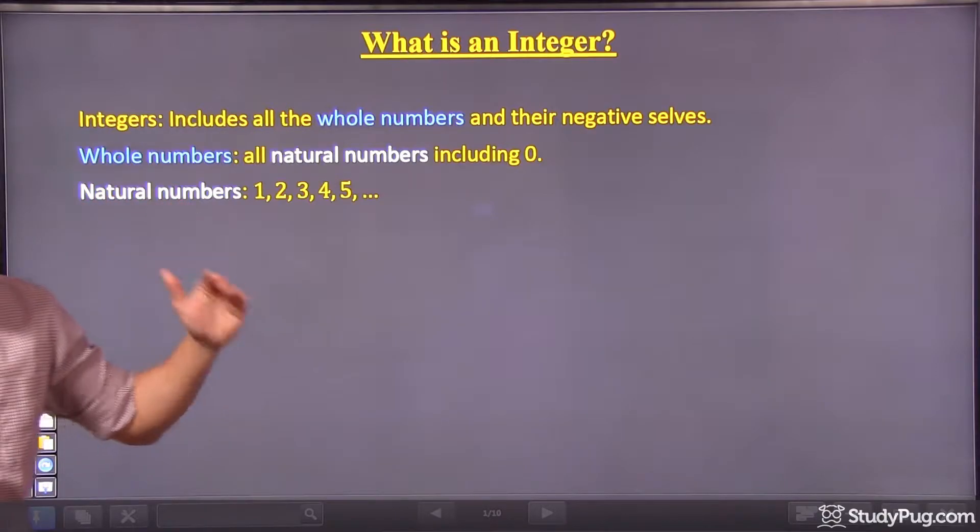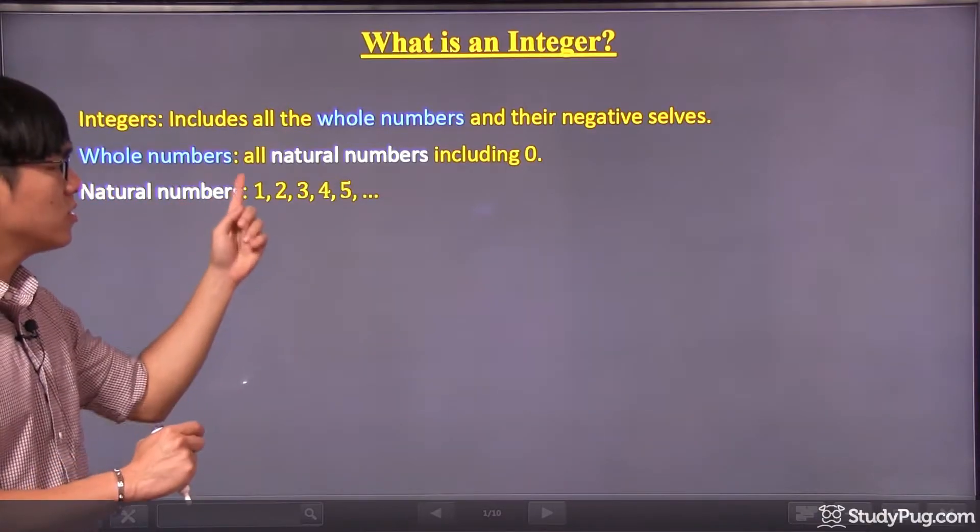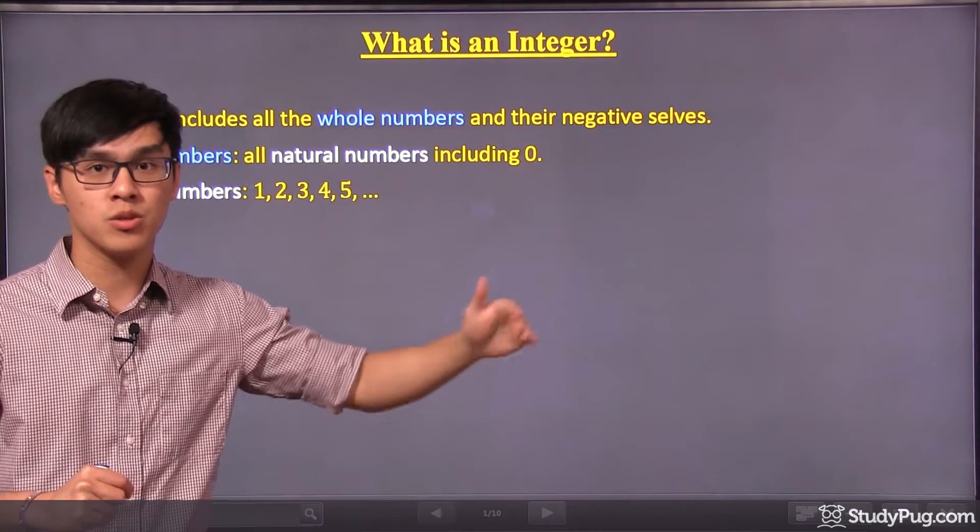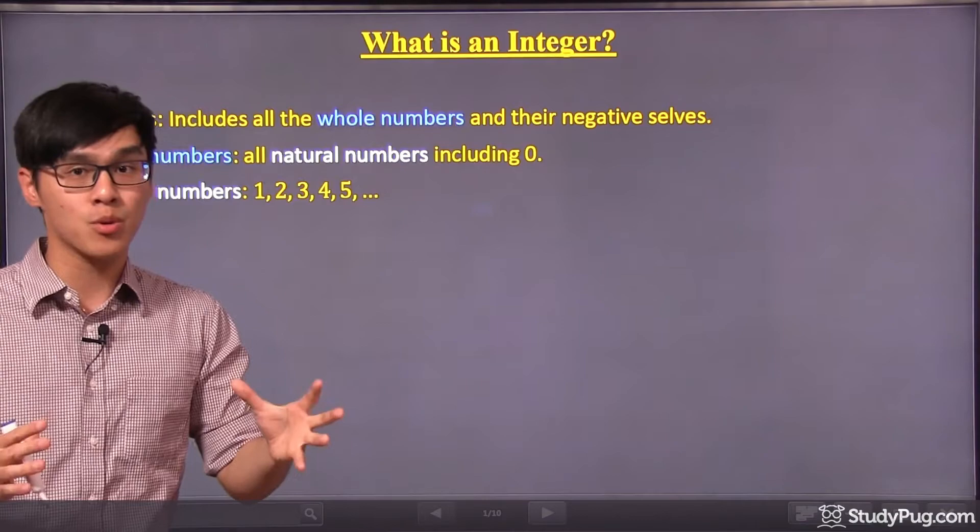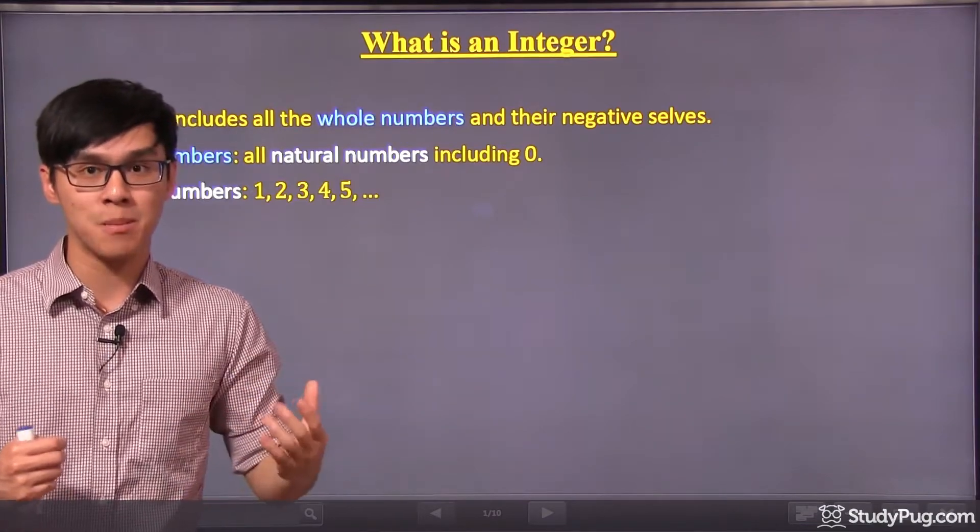Natural numbers are any numbers starting from one: one, two, three, four, five, so on and so forth. These are called natural numbers because these are the natural numbers that we first learned as a baby.